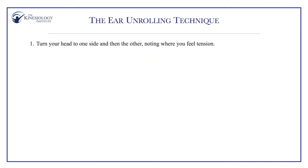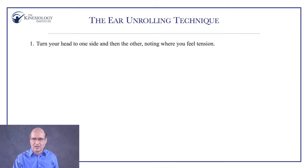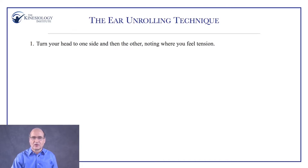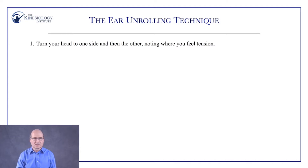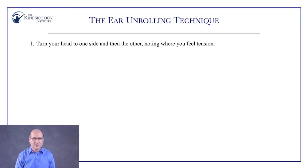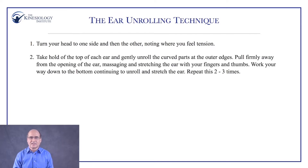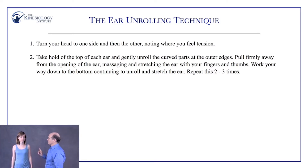We're going to begin with the ear unrolling technique. This is a technique I use a lot for myself and when working with other people, and I've taught many people this. You're going to turn your head from one side to the other and see if one side is stiffer than the other. Jana, do you notice one side is stiffer? Come up and I'll show you what we're going to do — we'll take hold of the top of each ear and gently unroll it. Which way is stiffer for you? When you turn this way?